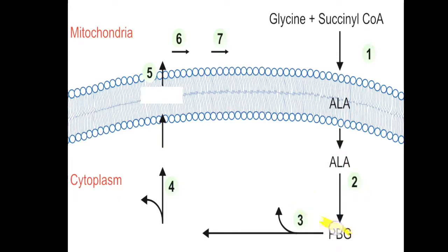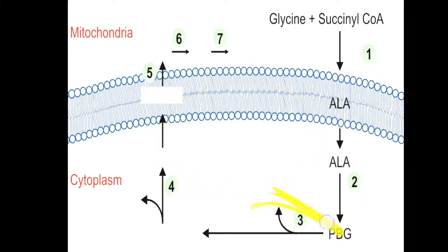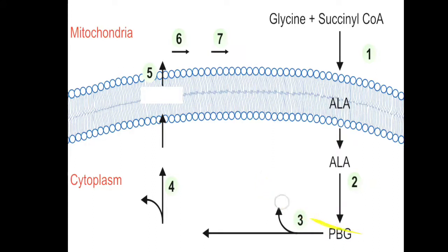PBG is also considered a monopyrrole. Since heme has a porphyrin ring structure with four pyrrole rings, and PBG is a monopyrrole, we need four PBG molecules. These four molecules of PBG undergo deamination. The enzyme PBG deaminase separates four molecules of ammonia from four PBG molecules, and finally HMB, that is hydroxymethylbilane, is synthesized.